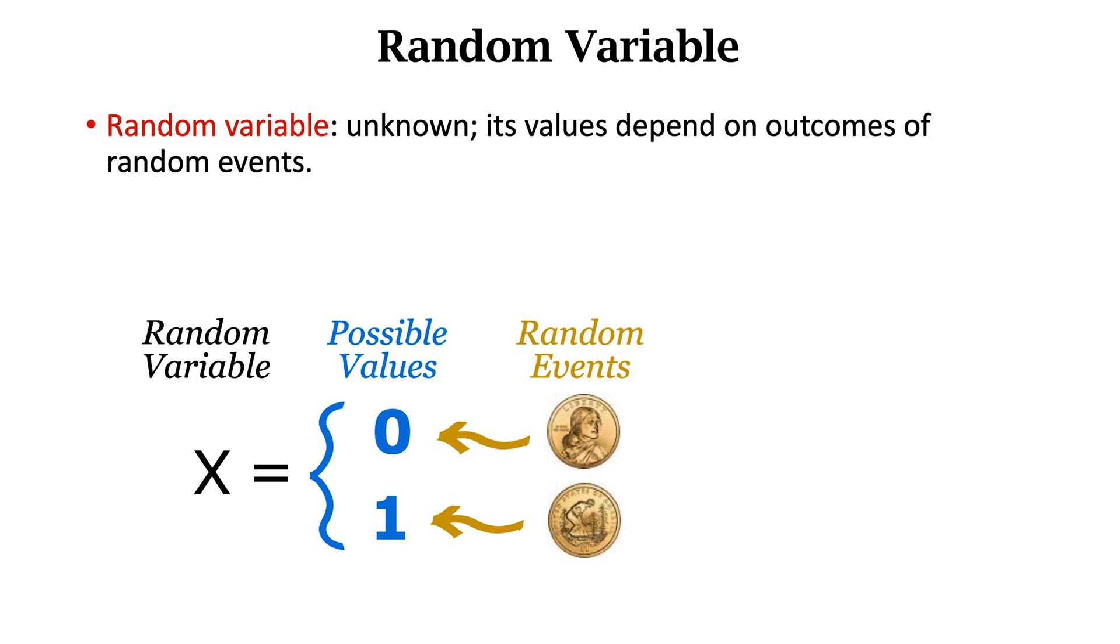Denote the head by zero and tail by one. Let X be the random variable whose value depends on the outcome of coin flip. The value of X can be either zero or one. Before I toss a coin, I don't know what the outcome will be.